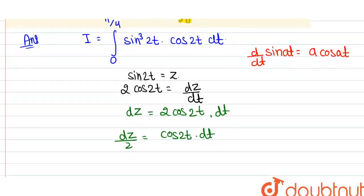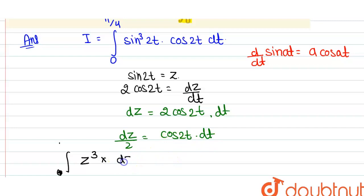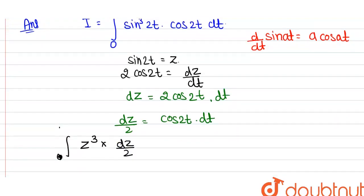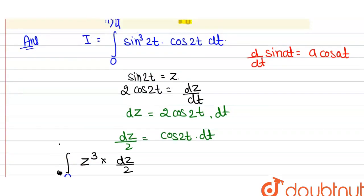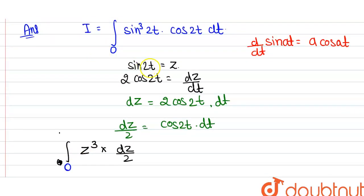Now substitute the values in the expression, replacing sin(2t) with z and cos(2t) dt with dz/2. The limits also change: the lower limit t = 0 gives sin(0) = 0, and the upper limit t = π/4 gives sin(2·π/4) = sin(π/2) = 1. So the new limits are 0 to 1.